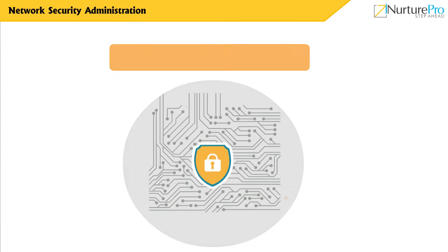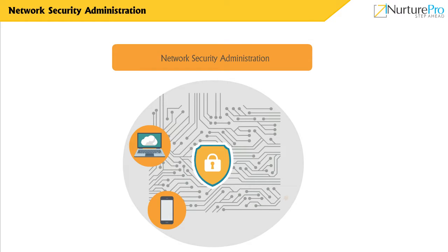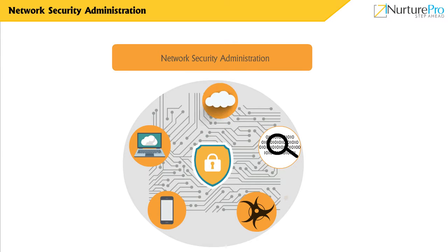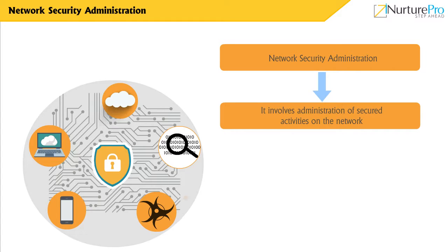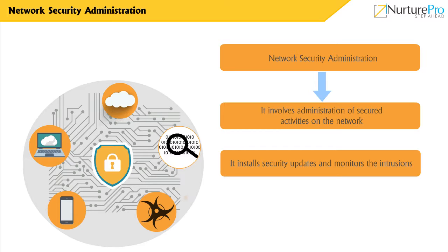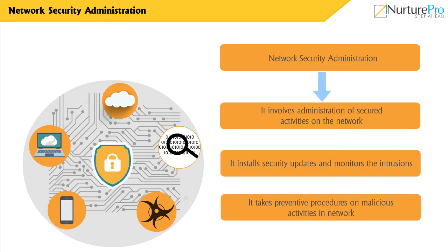In any efficient network, it is very important to monitor the security activities of the network. Security monitoring takes proper security decisions to implement the appropriate security policies in the network. It also involves administration of secured activities on the network. Network security administration is not only just installing security updates and intrusion monitoring, but also taking preventive procedures on various malicious activities.